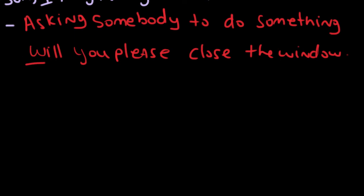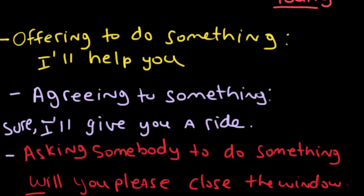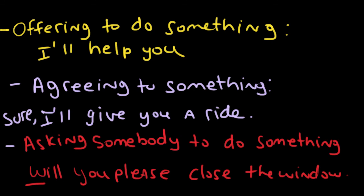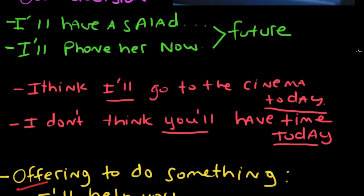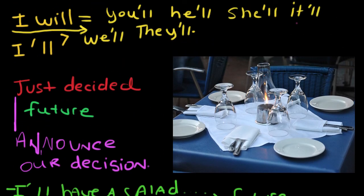I hope this video has helped you learn about the instances when we use 'will' to talk about our decision or announcement that we will do something in the future — for example, for offering to do something, agreeing to do something, or asking someone to do something. We also use 'will' with 'I think' and 'I don't think,' and to talk about decisions made in the moment.